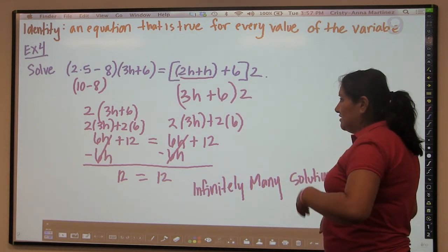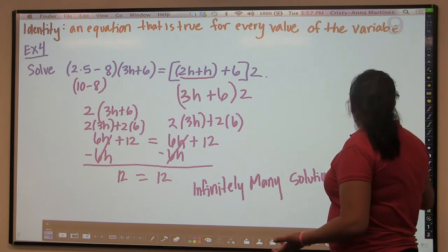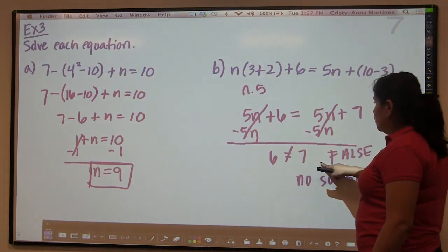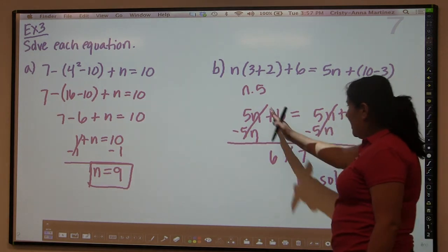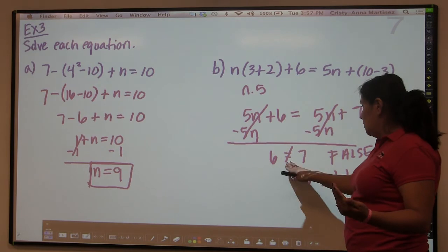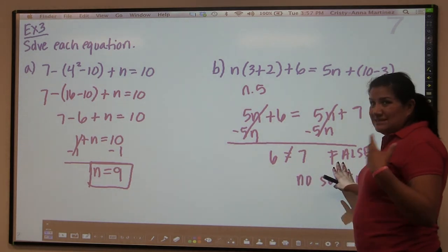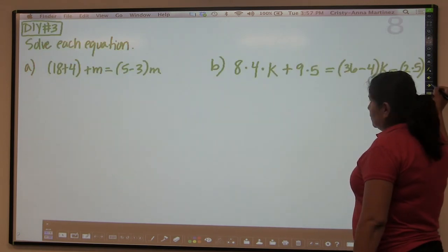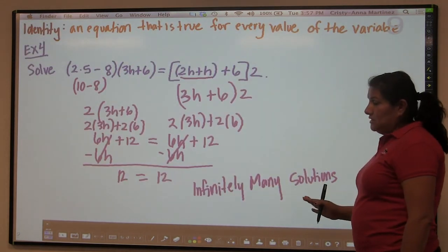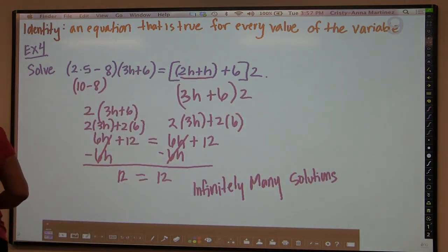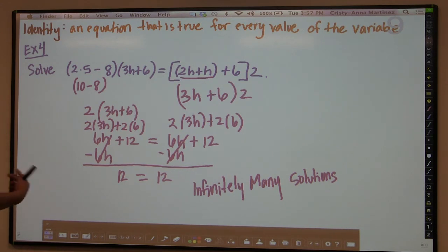In example 3B, the variable canceled and the resulting statement — 6 equals 7 — was false, so there's no solution. In this identity example, the variable canceled and the resulting statement — 12 equals 12 — is always true, so there are infinitely many solutions. When it's never true: no solution. When it's always true: infinitely many solutions.